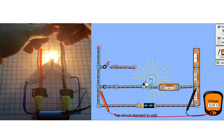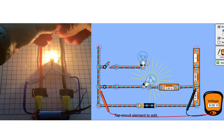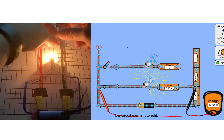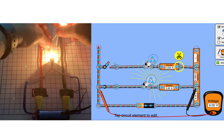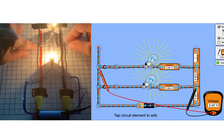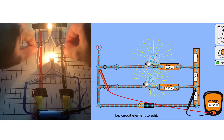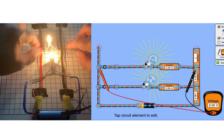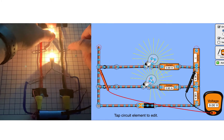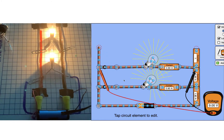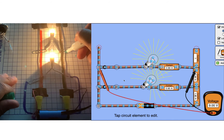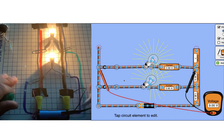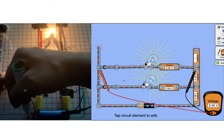Now I'm going to add a second bulb in parallel with the first bulb — basically creating another series loop. Since they're both connected to the same voltage source, they are wired in parallel. Notice that the voltmeter still reads nine volts across the second loop. Make sure to keep an eye on all of the values as well as the brightness of the bulbs.